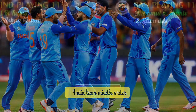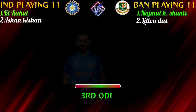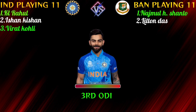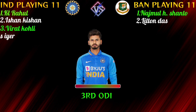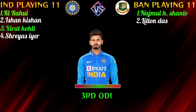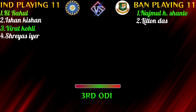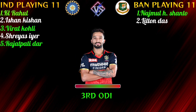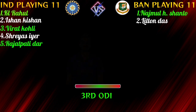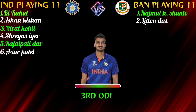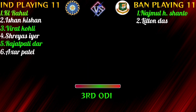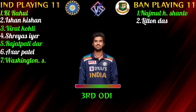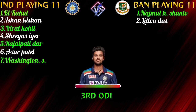India team middle order: No. 3 Virat Kohli, Right-hand Batsman. No. 4 Cheres Iyer, Right-hand Batsman. No. 5 Rajat Patidhar, Right-hand Batsman. No. 6 Akshar Patil, Bowling All-Rounder. No. 7 Washington Sundar, Batting All-Rounder.